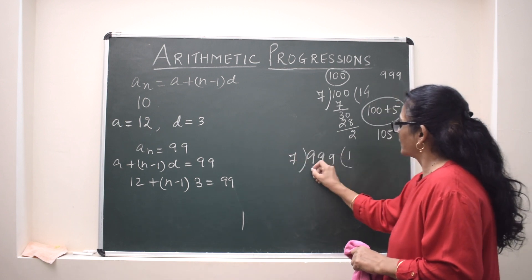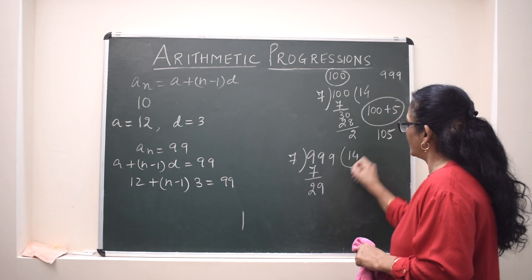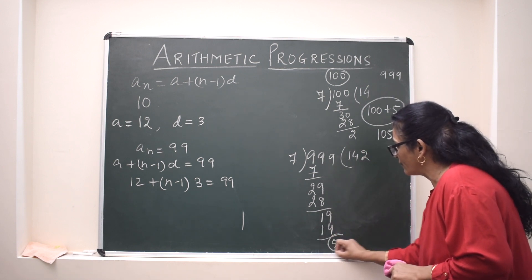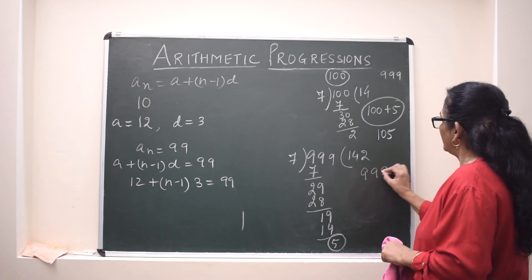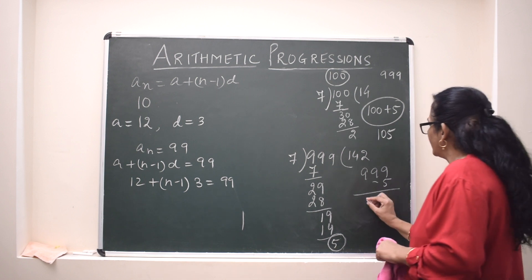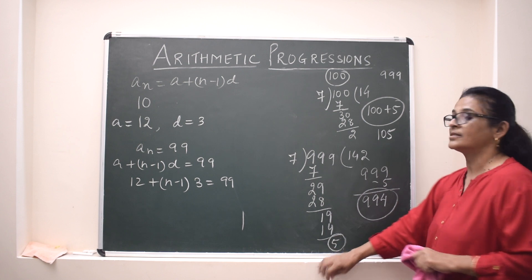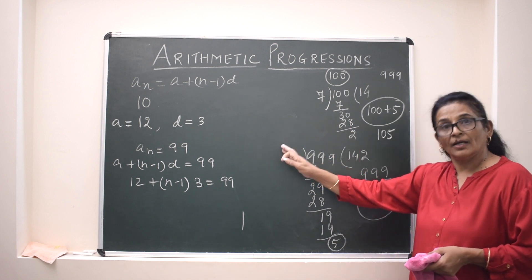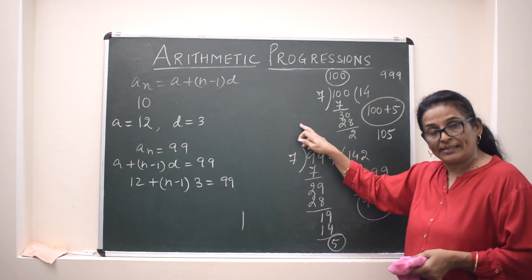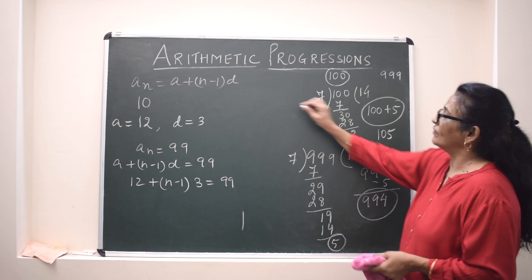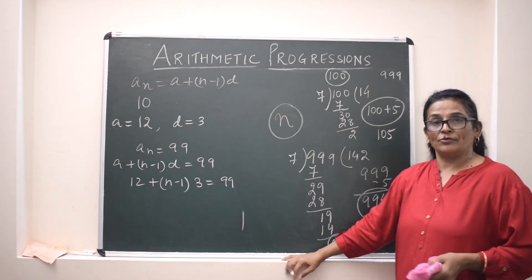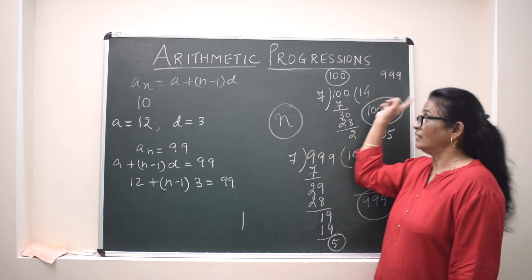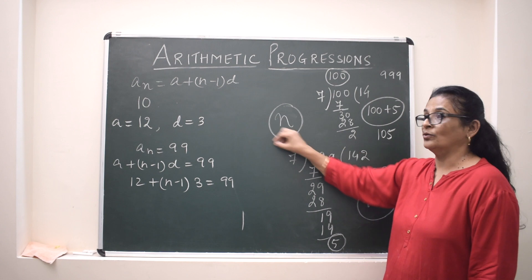To summarize the method: for the first term of a given digit range divisible by a number, divide the starting value and add what is missing to reach the next multiple. For the last term, subtract the remainder from the ending value. With the first term, last term, and common difference known, apply the nth term formula to find N.